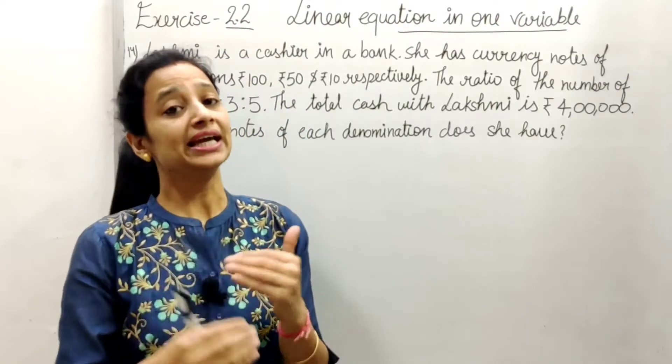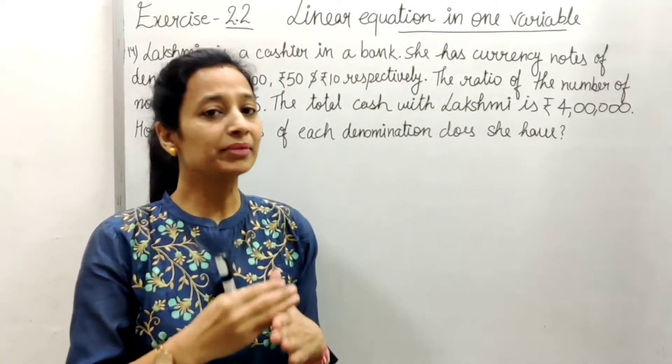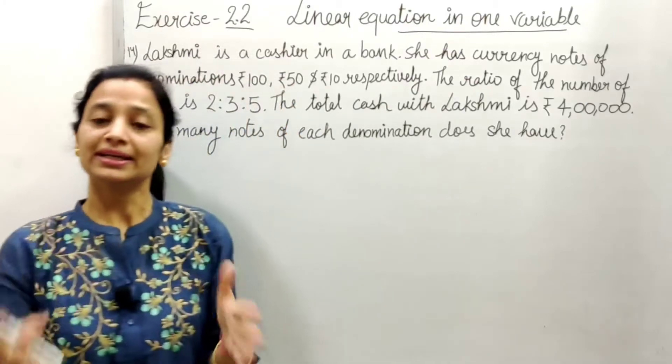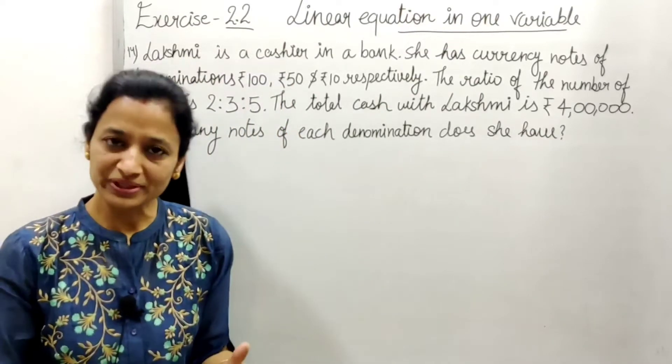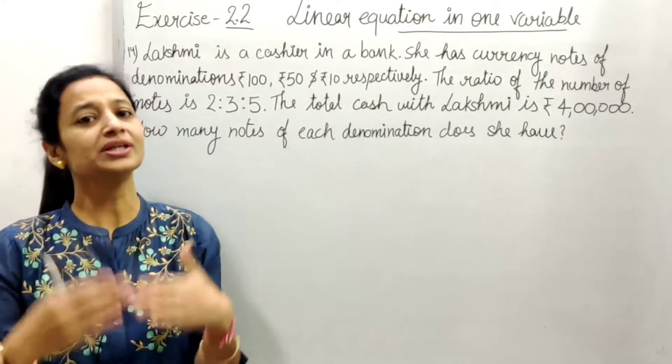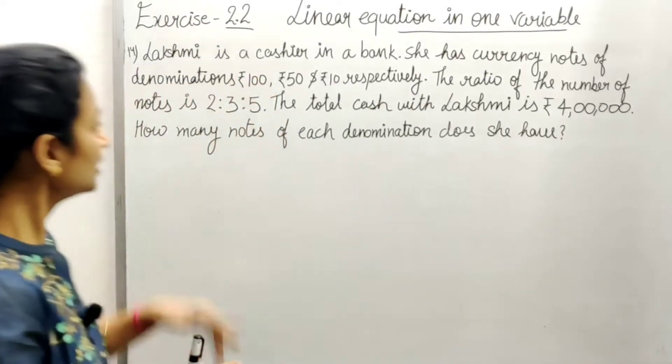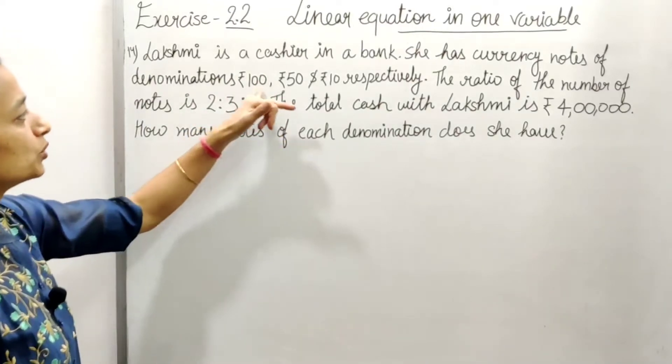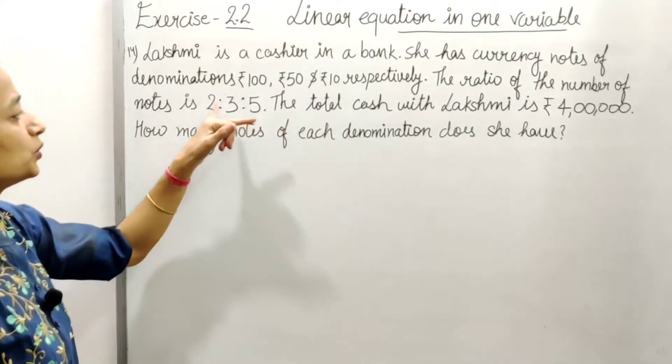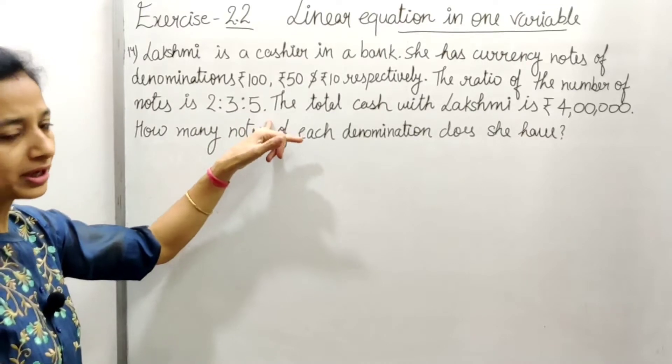We are asked how many notes there are—the number of ₹100 notes, number of ₹50 notes, and number of ₹10 notes. We need to find this. We are given the ratio these notes are in, which is 2:3:5. From this ratio, we will find the solution by assuming variables.